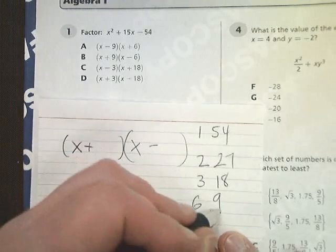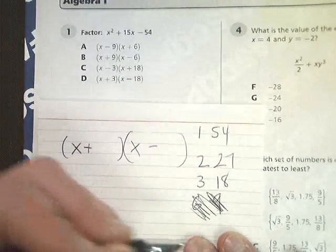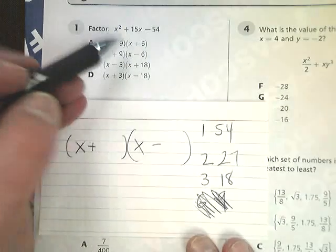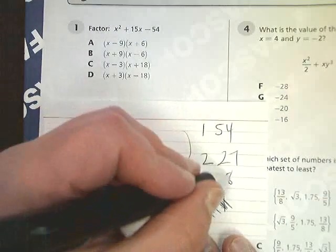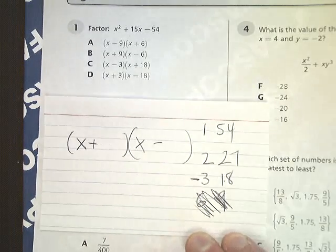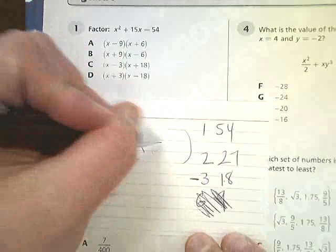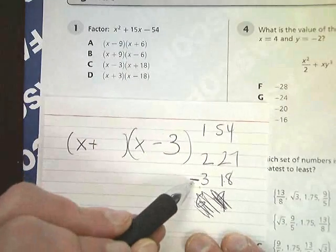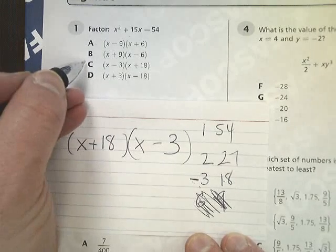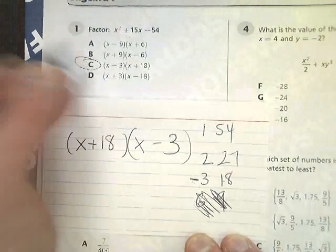9 minus 6, that won't give me 15. So you have to be careful because 9 plus 6 does give you 15. But since it's negative and they're different, you're subtracting. I'm looking for positive 15, and I know that 18 minus 3 does give me the 15 that I'm looking for. So what I'm going to do is put my 3 after the minus because it would take minus 3 and the 18 here. So my answer is (x - 3)(x + 18).